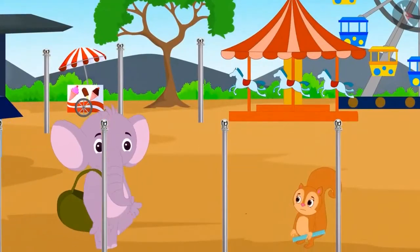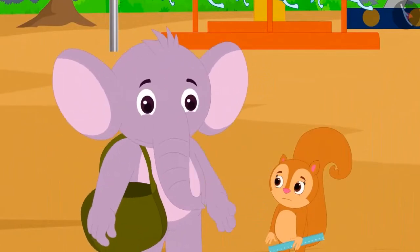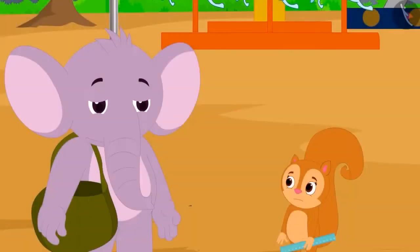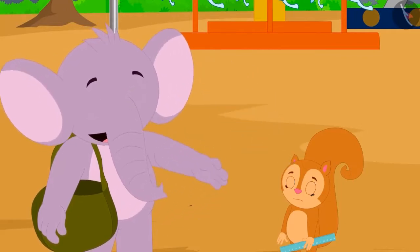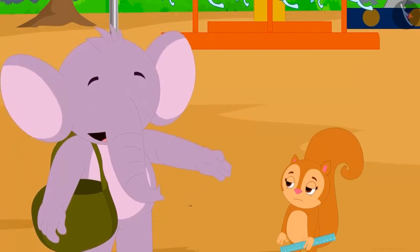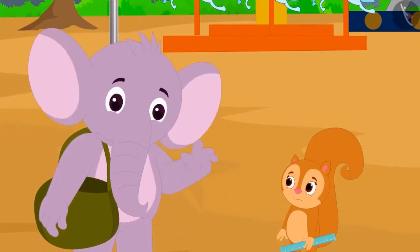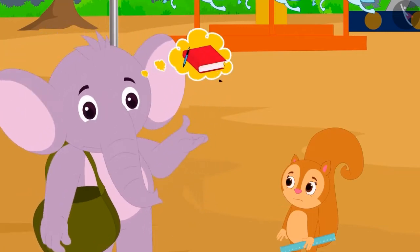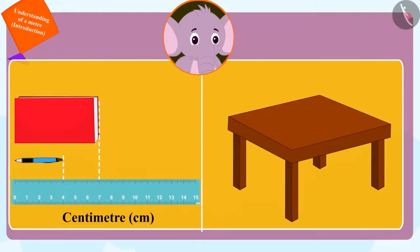Just then, Appu was passing by. Seeing Chanda upset, he asked what she was measuring using that small ruler. Chanda told him she was trying to measure the distance between the poles. Appu started laughing loudly. When Chanda asked him why, Appu told her that she could only measure the length of small objects like a pen, notebook, etc., in centimeters with the help of a ruler.